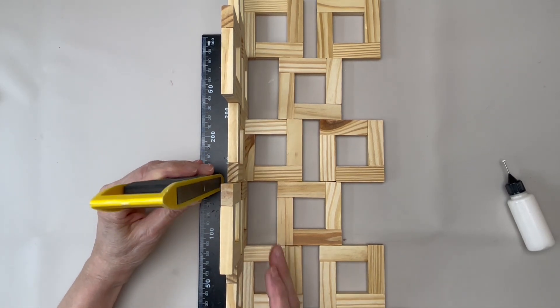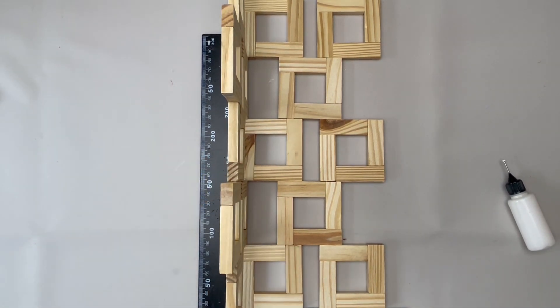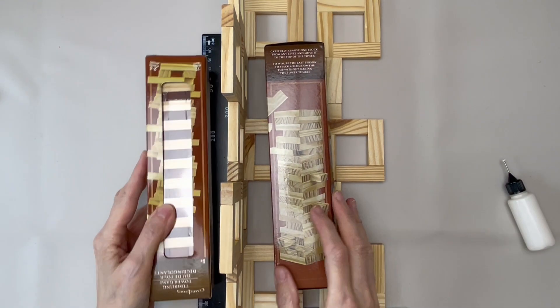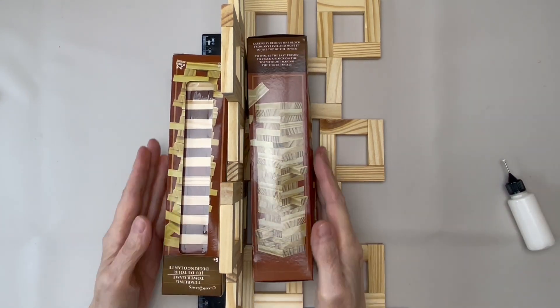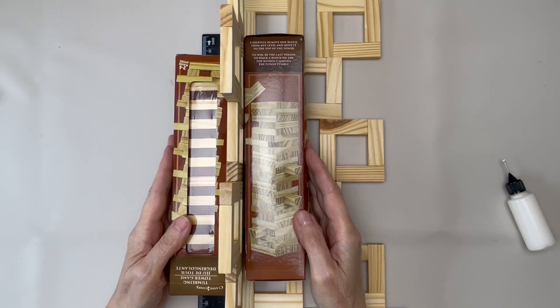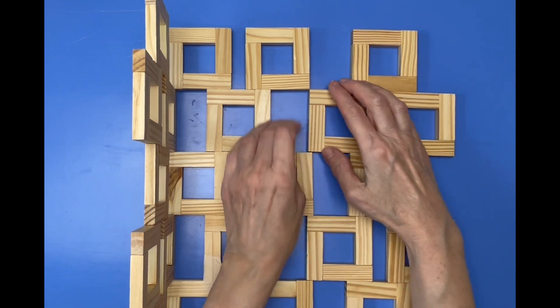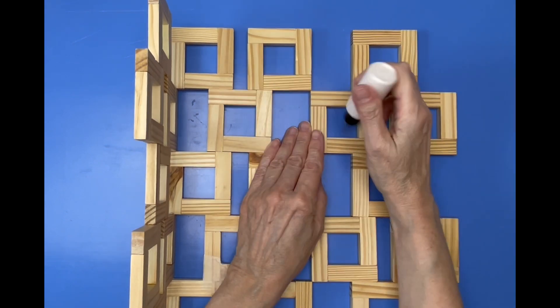Use a level to make sure the side is plumb, and then put some support on either side of it while it dries. Ironically, you can use boxes of tumbling tower blocks. If you're having trouble with the fit, you can use some sandpaper to make adjustments.